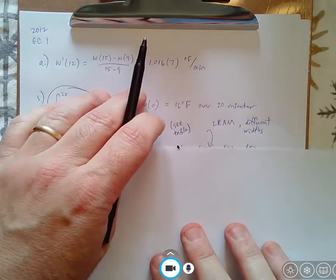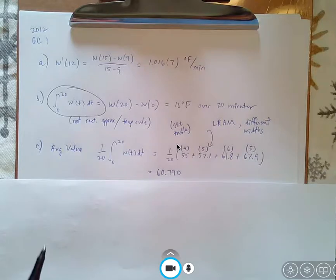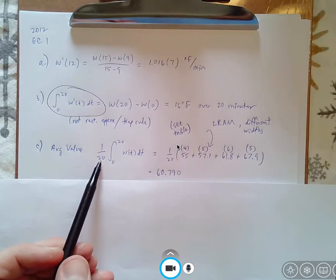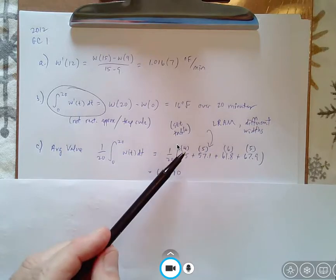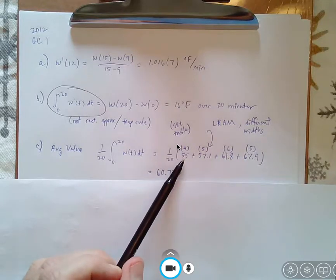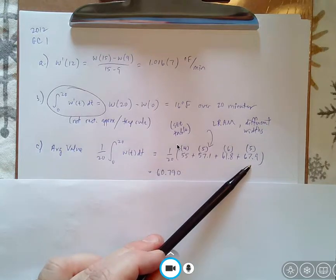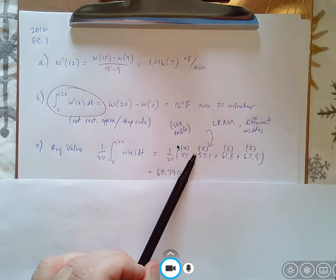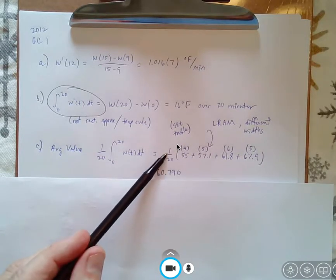Now for part C, you do have to use LRAM, but it's also incorporating with an average value. So the key with LRAM here is that the widths of the rectangles in parentheses are different. And again, consult your table. And then starting with the left endpoint, the temperature starts at 55, and then you go to 67.9. But then whatever answer you get in the parentheses, you multiply it by 1 over 20 because it's the average value.